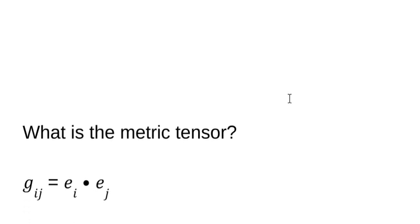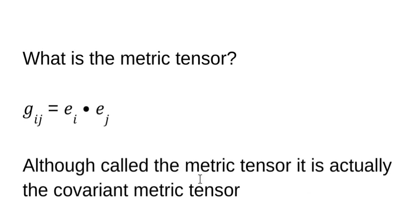What is the metric tensor? This is something we know, we understand, we use it. It is defined as the dot product, the scalar product of the basis vectors. Now you notice these are covariant basis vectors because this index is in the lower position, right? Now we call this the metric tensor, but it's actually the covariant metric tensor.